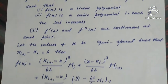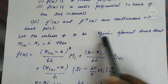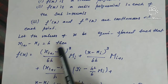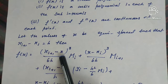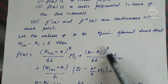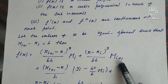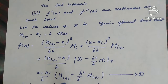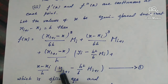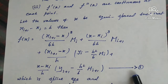Now we can see the formula for cubic spline. Let the values of x be equispaced such that x_{i+1} minus x_i equals h. Then f(x) equals [(x_{i+1} - x)^3 / 6h] * m_i + [(x - x_i)^3 / 6h] * m_{i+1} + [(x_{i+1} - x) / h] * y_i + [(x - x_i) / h] * (y_{i+1} - h²/6 * m_{i+1}). This is equation 1, the spline equation.